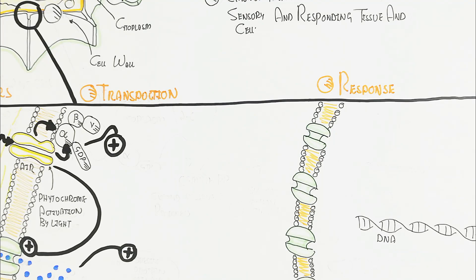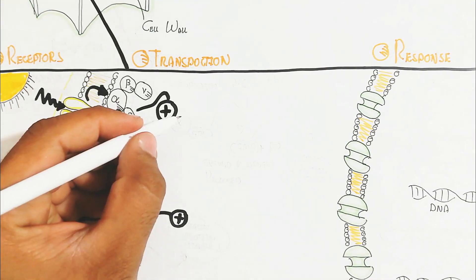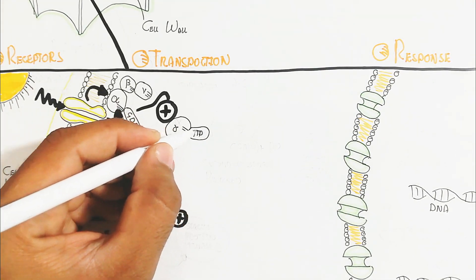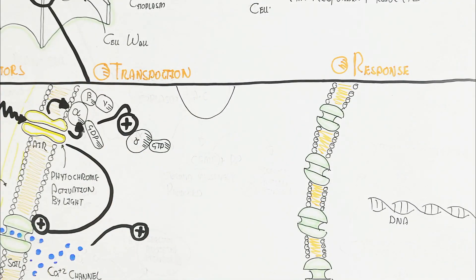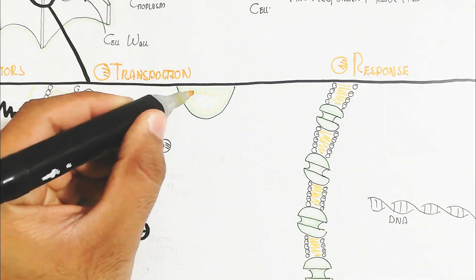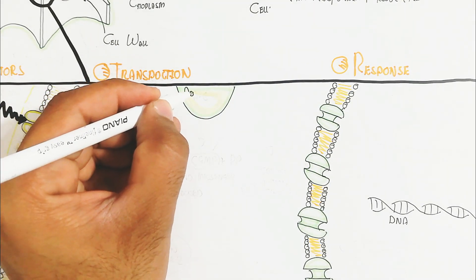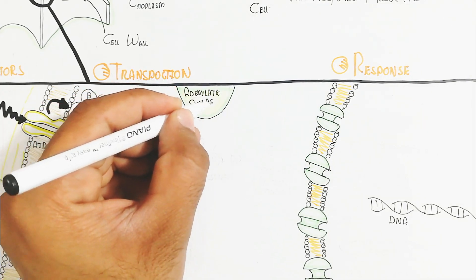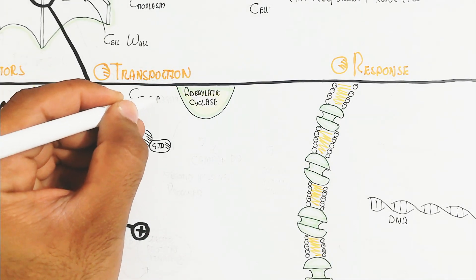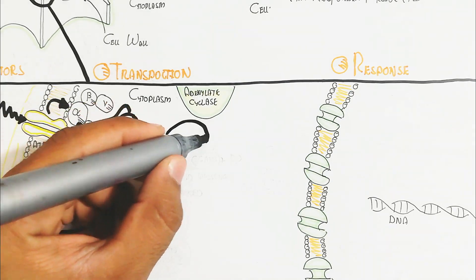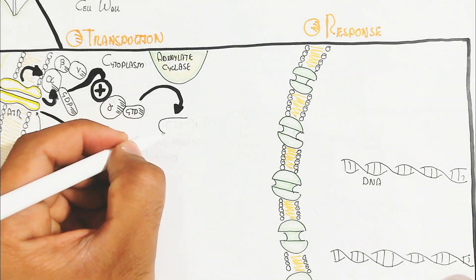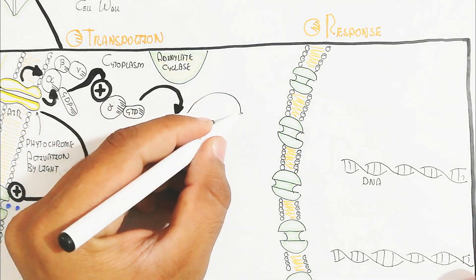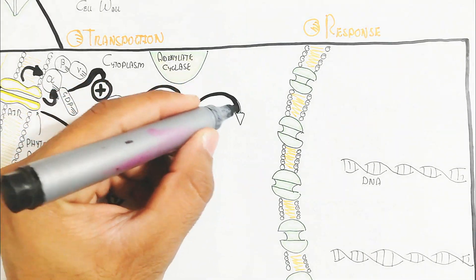The alpha subunit, activated through GTP, activates adenylate cyclase enzyme, which converts GTP into cyclic GMP, releasing pyrophosphate. The cyclic GMP acts as the second messenger in this pathway.